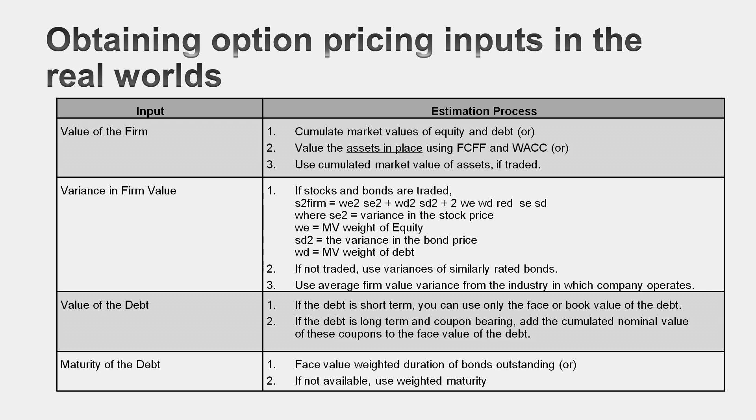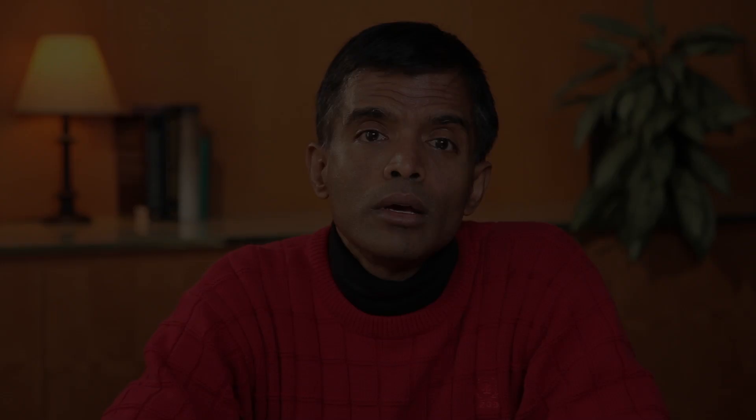For the variance in the value of the business, you can use past stock prices and bond prices, but that's messy. The better approach is to use industry average variances. Plug those inputs into your option pricing model and you'll get a value for equity in a deeply distressed company. In summary, when we normally value equity, we use discounted cash flow or relative valuation models. But sometimes, if you're valuing equity in a troubled firm, it pays to think of it as an option and value it as such.